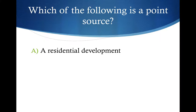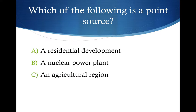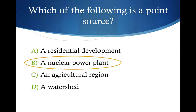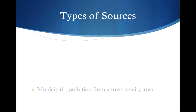To check your understanding: which of the following is a point source? A, a residential development; B, a nuclear power plant; C, an agricultural region; or D, a watershed? The correct answer is B, a nuclear power plant, because it is a single identifiable location on a map. The other three — residential developments, agricultural regions, and watersheds — are all broad areas and would be considered non-point sources.